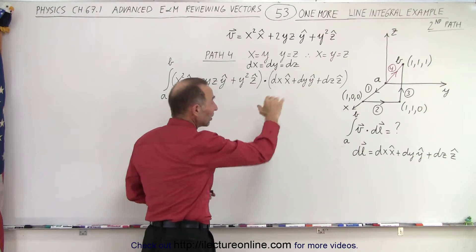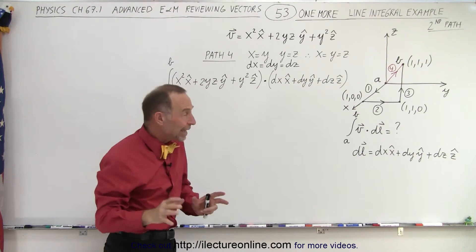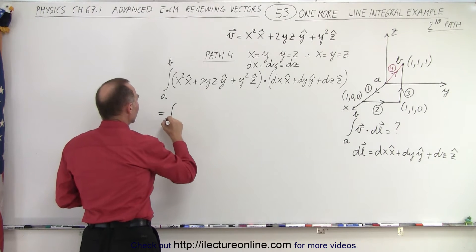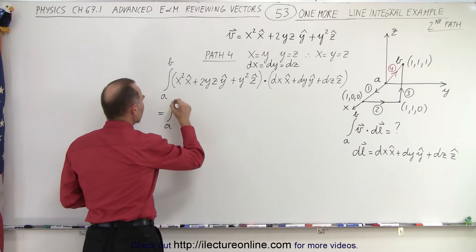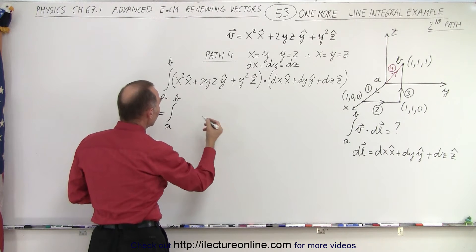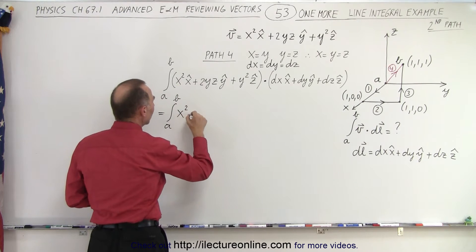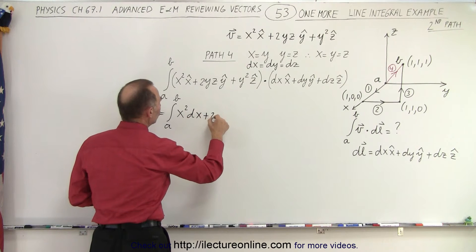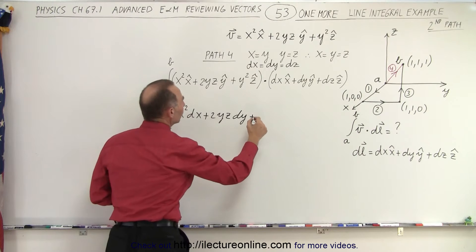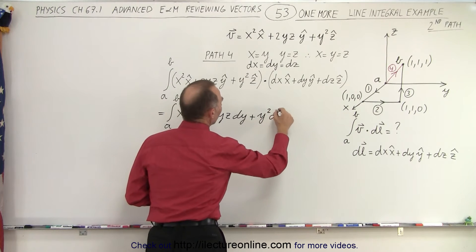So if we first take the dot product, then we can probably make it a lot easier to manipulate. So let's see what this ends up being. The integral from A to B. And we multiply the x components, the y components, and the z components, so we get x squared times dx plus 2yz times dy plus y squared times dz.